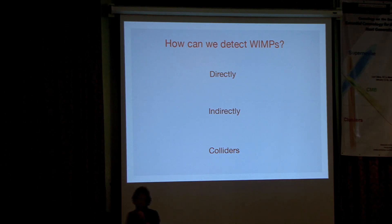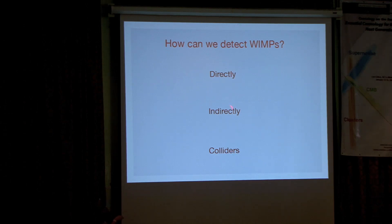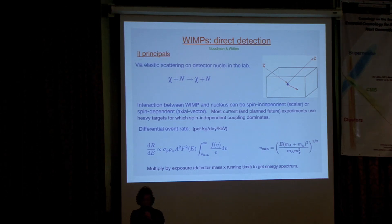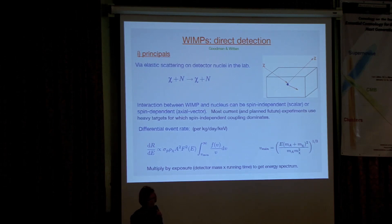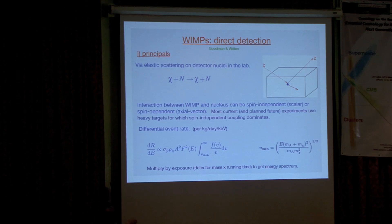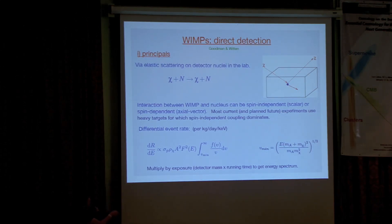Given some particle physics ideas about what WIMPs could be, how are we going to detect them? Broadly, there are three methods: direct detection, indirect detection, or making them at colliders. For direct detection, we're sitting in the Milky Way, which we believe has a dark matter halo, so there'll be a huge number of WIMPs passing through this room every second. Because they're weakly interacting, most will stream straight through, but a small fraction will interact with nuclei in our detector. So you build a dedicated detector: your WIMP comes in, scatters off a nucleus, the WIMP goes away again, and the nucleus recoils, depositing energy in the detector. What you're trying to do is detect the energy deposited by this recoil.